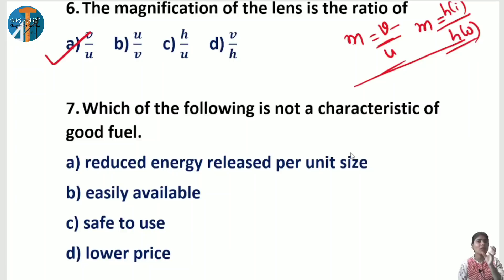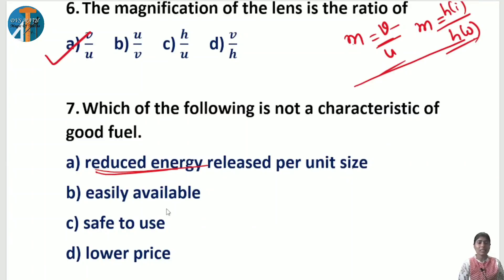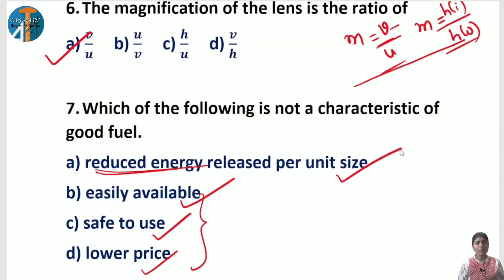Question 7: which of the following is NOT a characteristic of a good fuel? Characteristics of a good fuel include: easily accessible, eco-friendly, high calorific value, safe to use, and economical. Looking at the options — 'reduced energy released per unit time' does not match since we want high calorific value. 'Easily available', 'safe to use', and 'economical' are all valid characteristics. So the answer is option A: reduced energy released per unit size — that is NOT a characteristic of a good fuel.